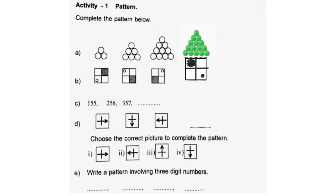C. The number pattern is: 155, 256, 357, 458. D. Choose the correct picture to complete the pattern. The answer will be the 3rd pattern.